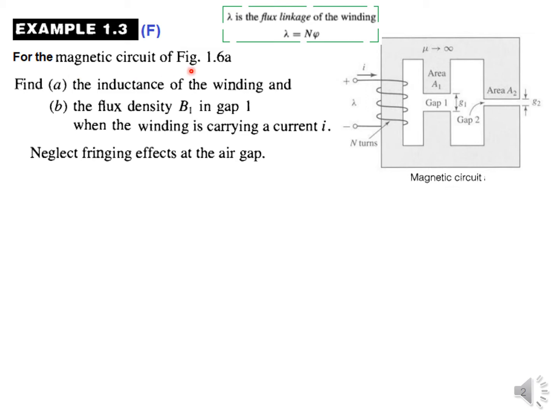For the magnetic circuit of Figure 1.6a, we have to find some things. First, let's see what this circuit tells. The circuit has the number of turns N, current flowing through it is i, and the flux linkage...